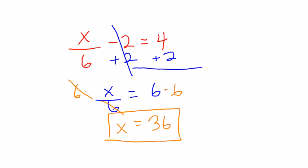And we will plug that solution into our original equation to make sure we are correct. 36 over 6 minus 2 should equal 4. 36 divided by 6 is 6. And 6 minus 2 equals 4. So our solution, once again, checks out.